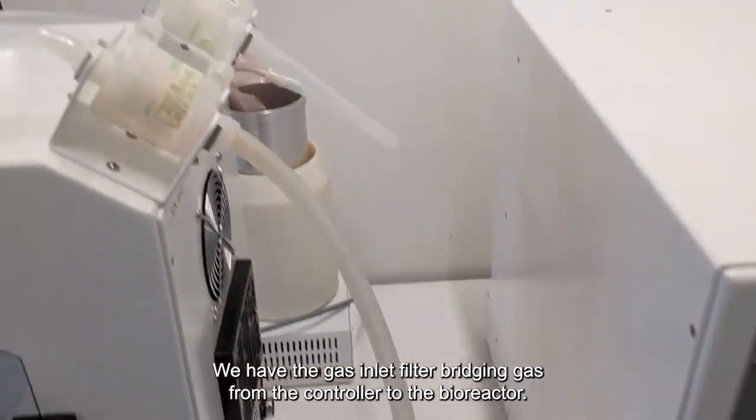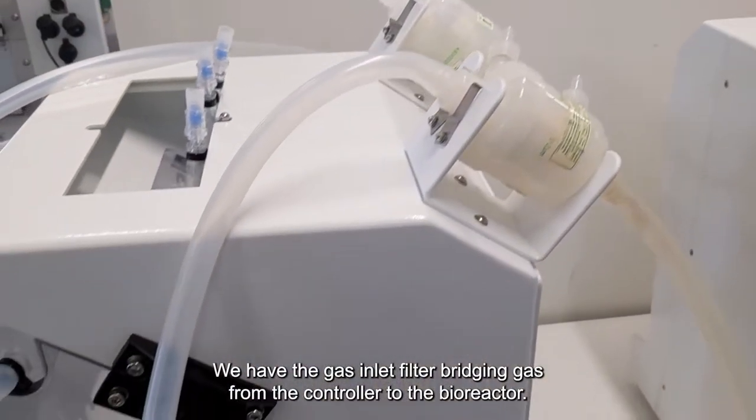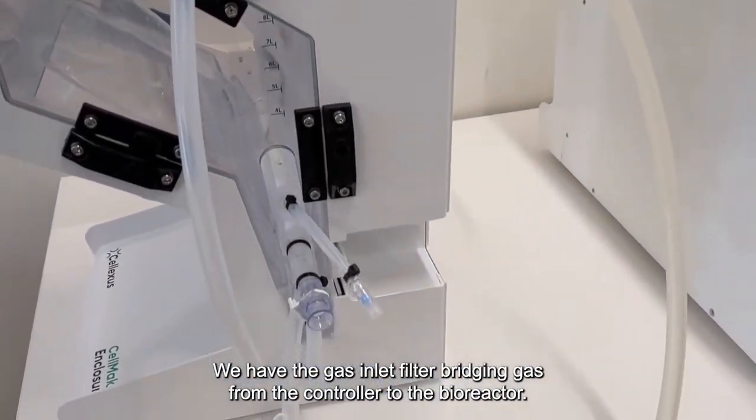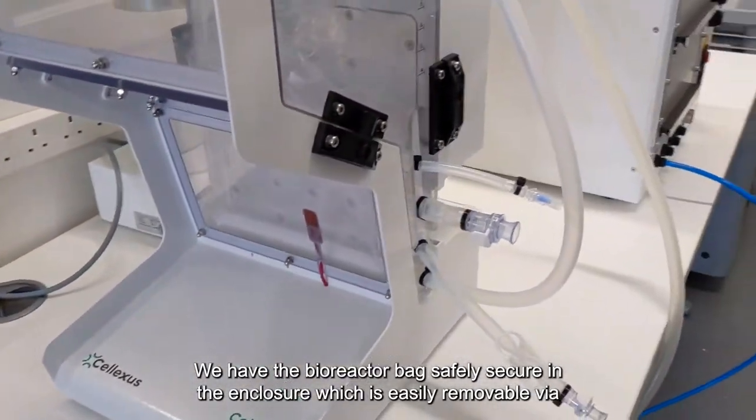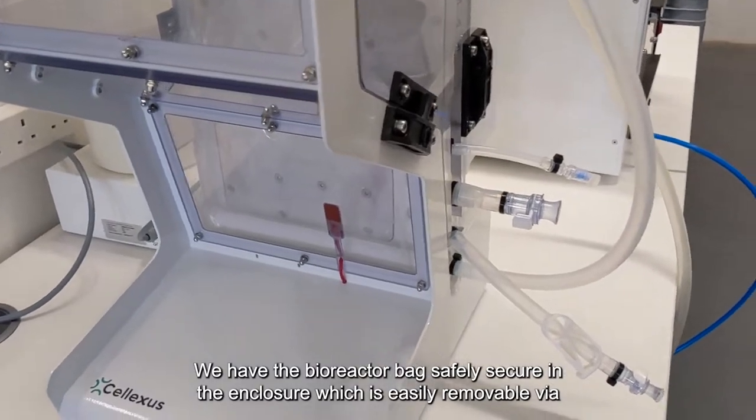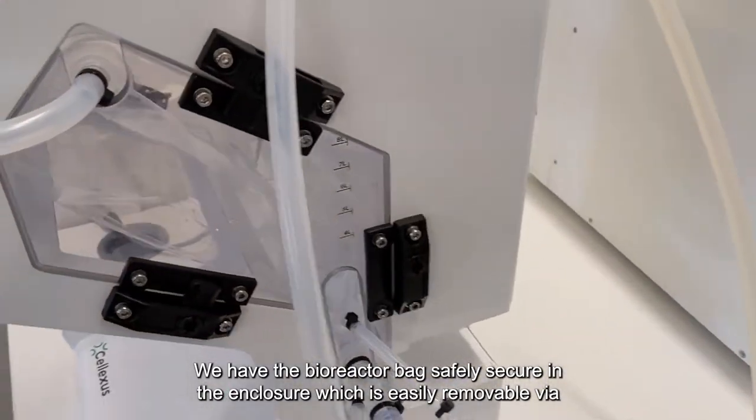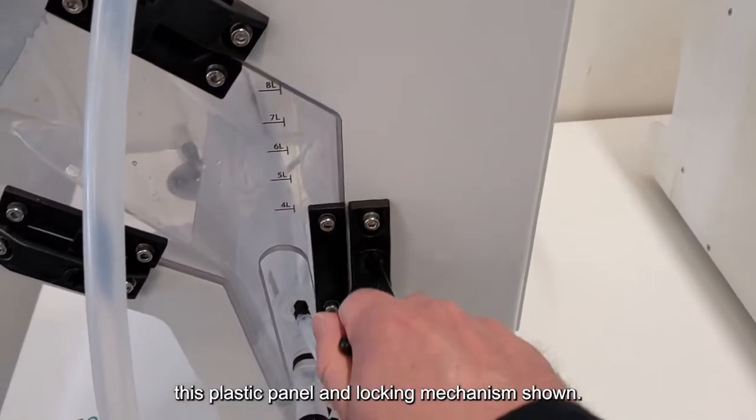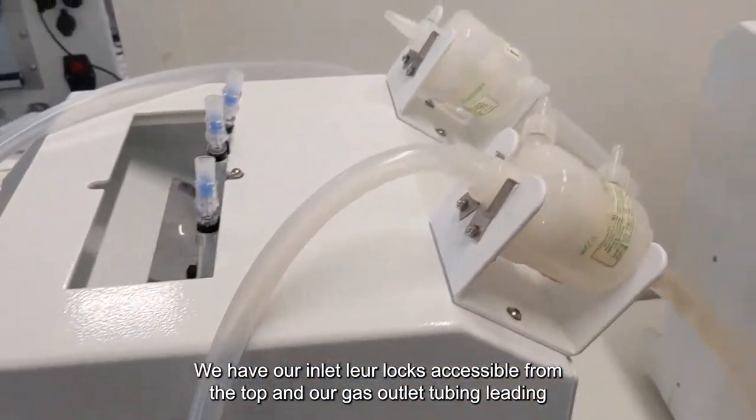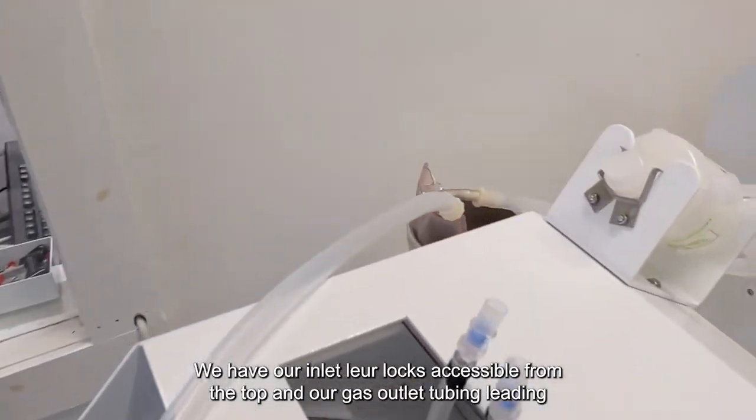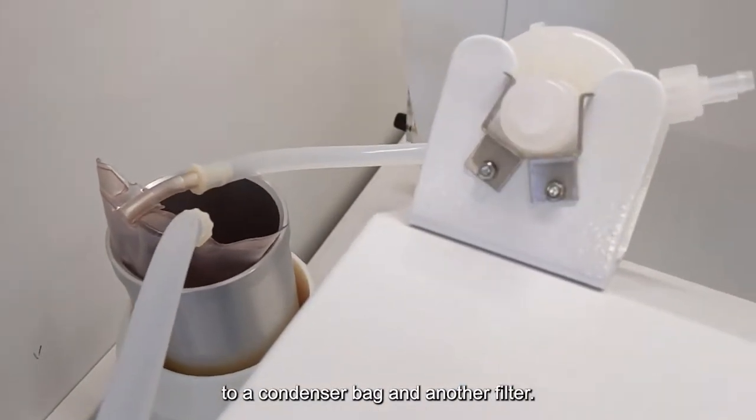We have our gas inlet filter bridging gas from the controller to the bioreactor. We have the bioreactor bag safely secured in the enclosure, which is easily removable via this plastic panel and locking mechanism shown. We have our inlet luer locks accessible from the top, our gas outlet tubing, leading to a condenser bag and another filter.